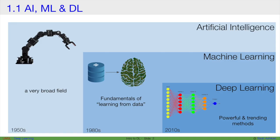Here is an example. Although many people use artificial intelligence, machine learning and deep learning interchangeably, they are different. Artificial intelligence is a very broad field. Machine learning is a subfield within artificial intelligence that deals with fundamentals of learning from data. And deep learning further is a subfield of machine learning.